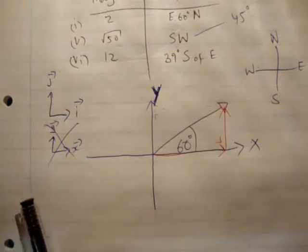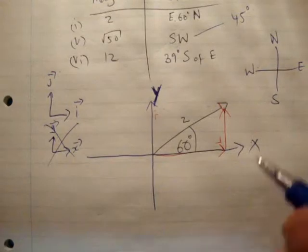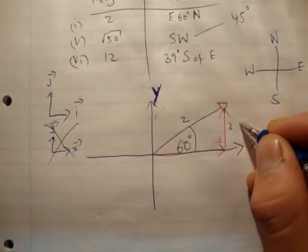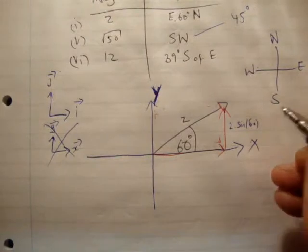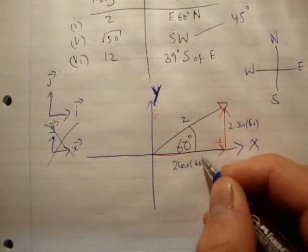Its magnitude is 2 units. Now, what we're doing next is exactly what was done in exercise 1C, and it should be very straightforward to you. 2 sine 60 is that length. 2 cosine 60 is that length.